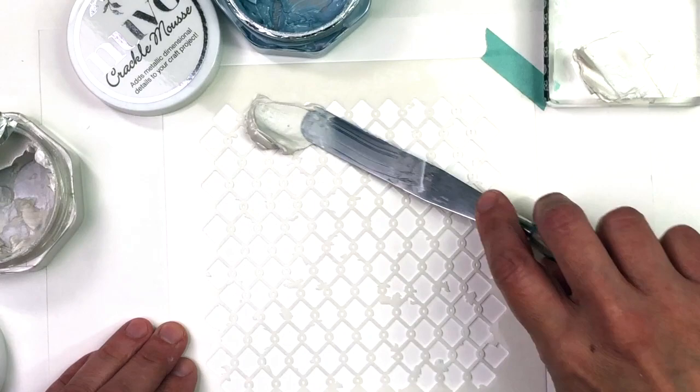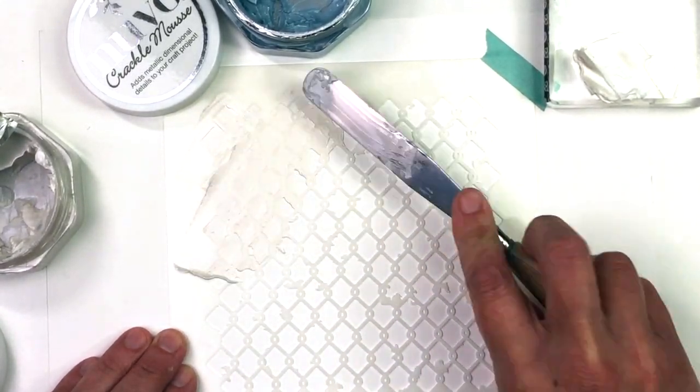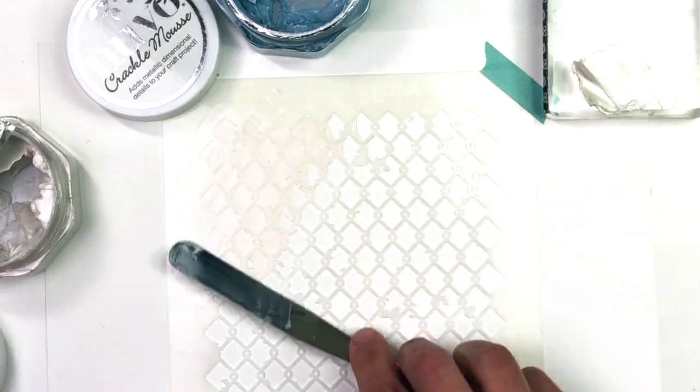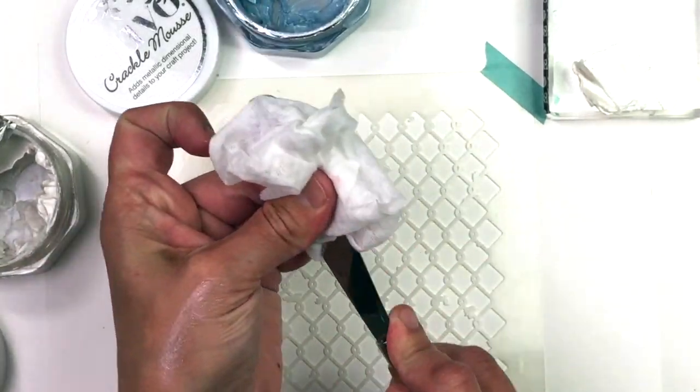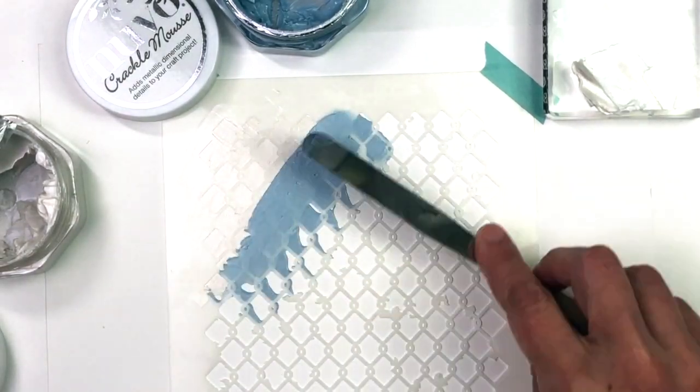Now back to this metal palette knife, which I mentioned is my favorite one. Part of the reason why I like it is because I can turn it on its side and work with a larger piece of my stencil than I can with the other spatulas, which have a smaller surface area.